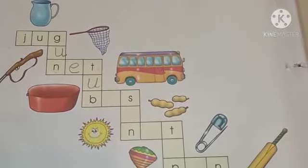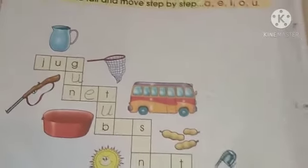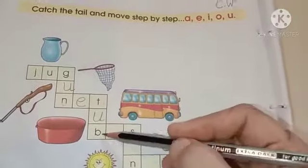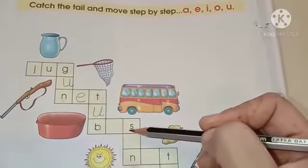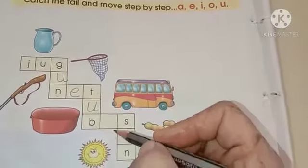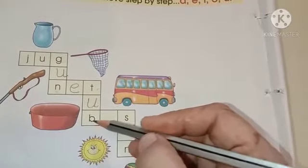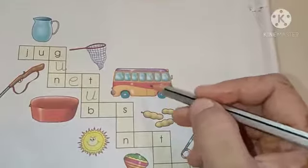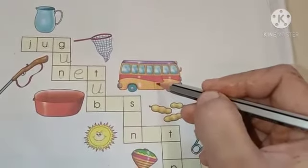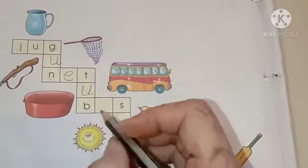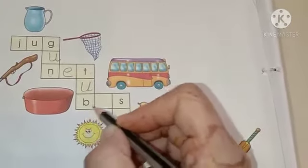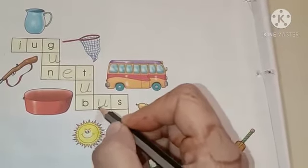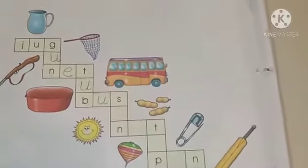Very good, children. I hope you are getting what we mean by catch the tail — with the last letter, you have to make a new word. Now, see here. It is B. Let us see the picture here. This is a bus. So, what will come here? B, Us — Bus.